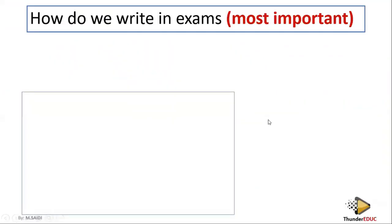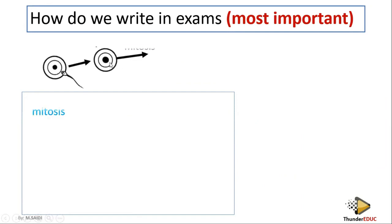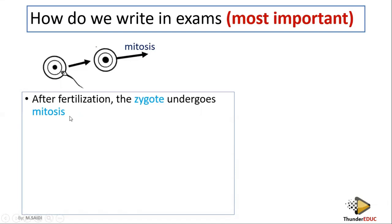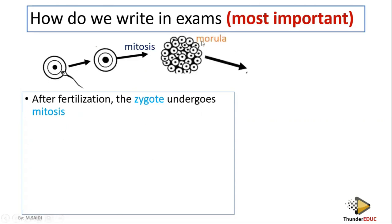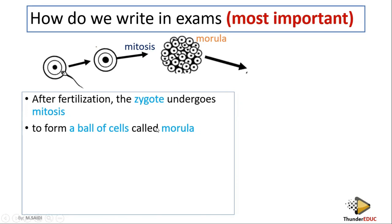Now let's look at how to write this in an exam. After fertilization, the zygote undergoes mitosis — that gives you a tick. It undergoes mitosis to form a ball of cells — that gives you a tick. This ball of cells is called a morula — that also gives you a tick. Each different colored statement represents a separate mark in the exam. It depends on how the question is set, but generally each point is a tick.